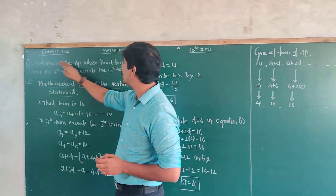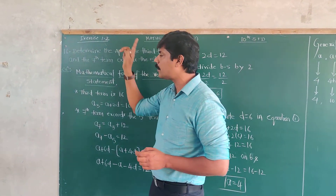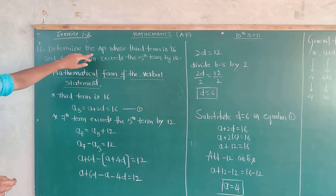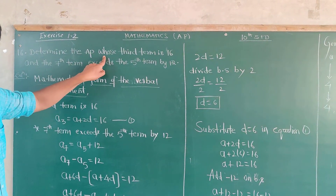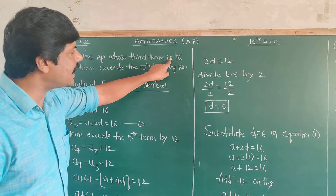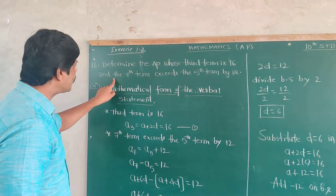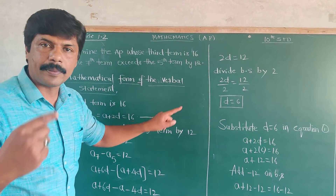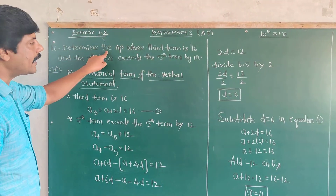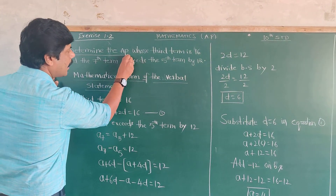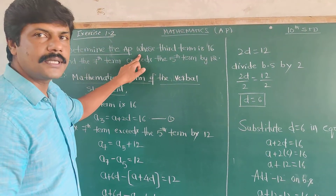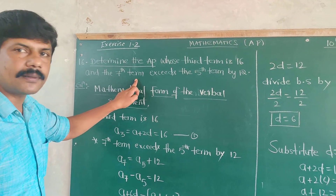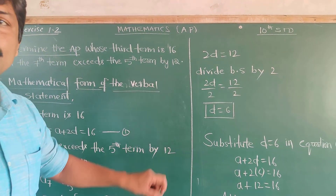We will study the 16th problem of Arithmetic Progressions Exercise 1.0, which says: Determine the AP whose third term is 16 and the 7th term exceeds the 5th term by 12.